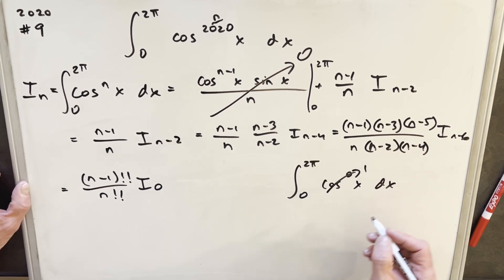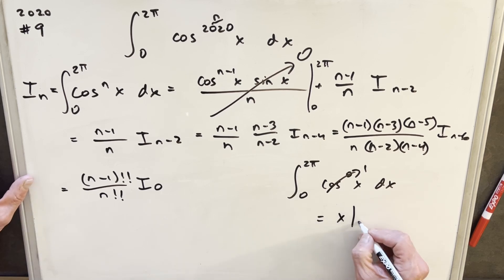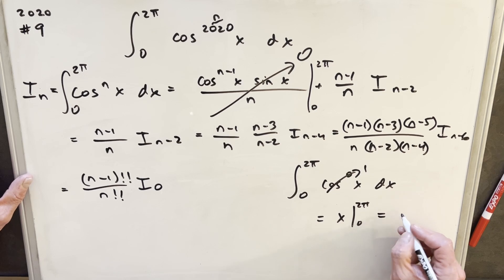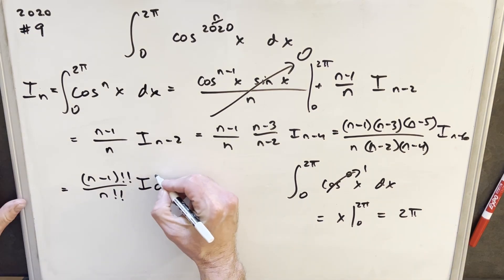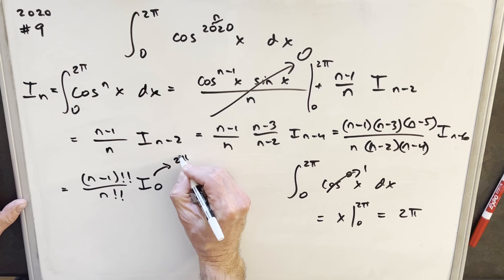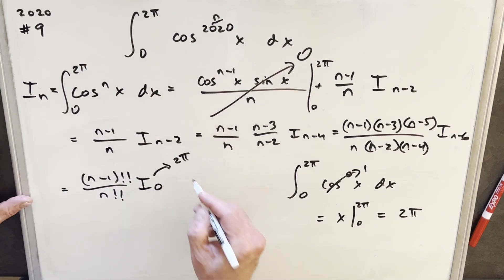Okay, so we're integrating 1. Integral of 1 is x, evaluated from 0 to 2 pi. That's just going to be 2 pi. Okay, so now we know that our i sub 0 is going to be 2 pi for these bounds.